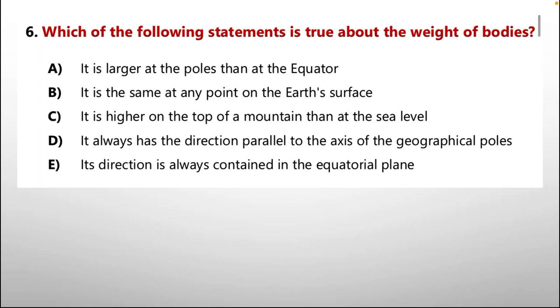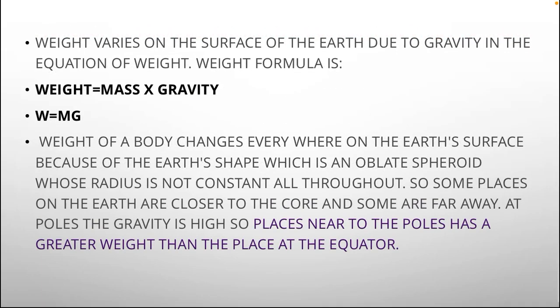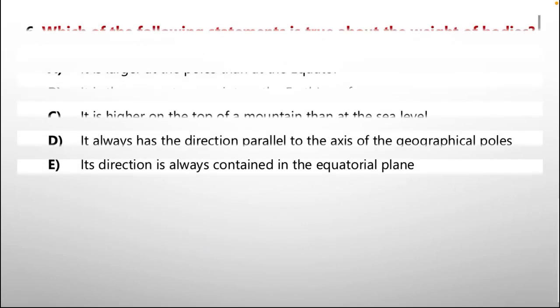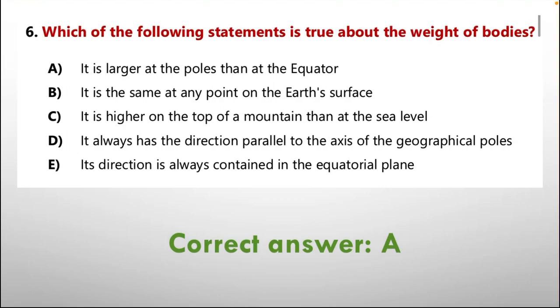Weight varies on the surface of the earth due to Earth's gravity. The weight formula is W = mg. Weight of a body changes everywhere on the earth's surface because of the earth's shape, which is an oblique spheroid whose radius is not constant throughout. Some places on the earth are closer to the core and some are farther away. Where the force of gravity is high, places near the poles have greater weight than at the equator. So the correct answer is option A: it is larger at the poles than at the equator.